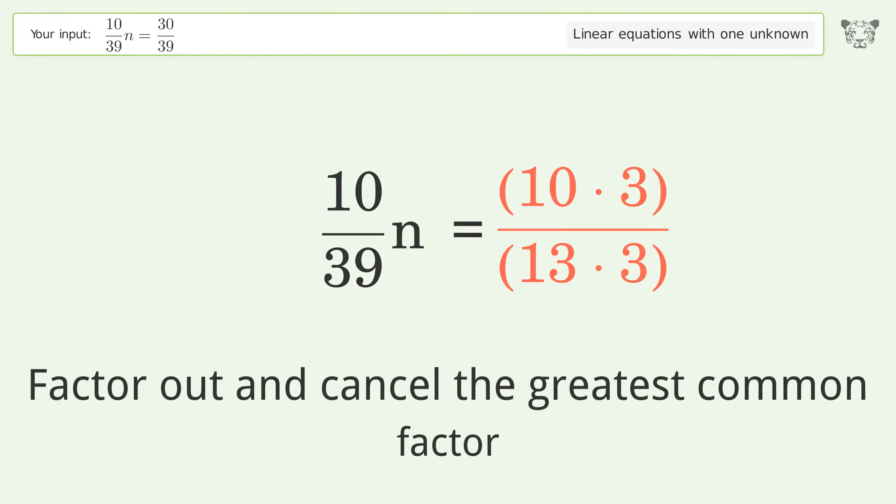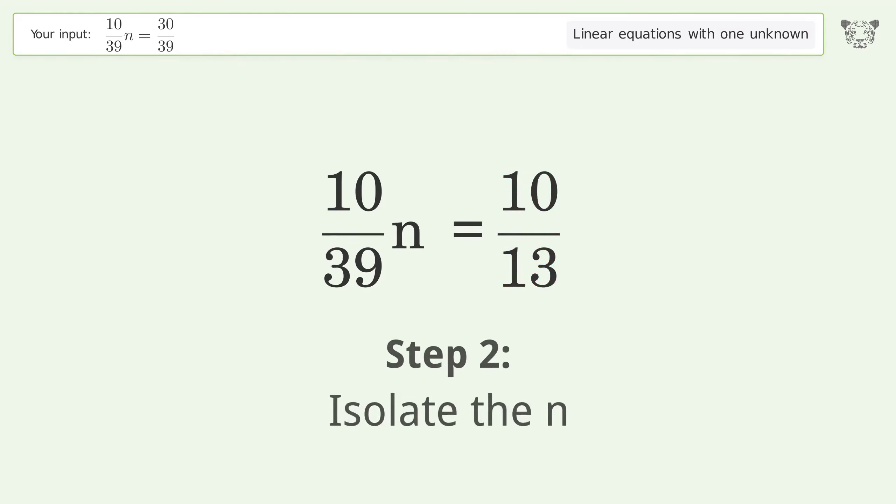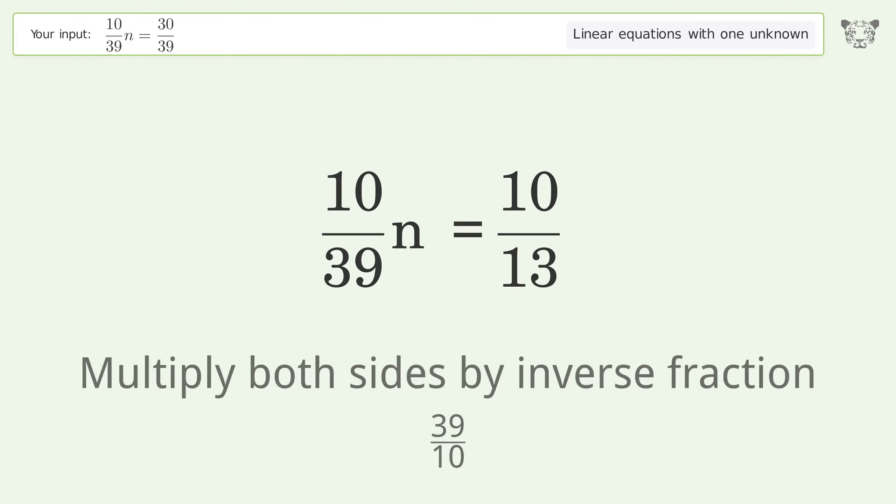Factor out and cancel the greatest common factor. Isolate the n by multiplying both sides by the inverse fraction, 39 over 10.